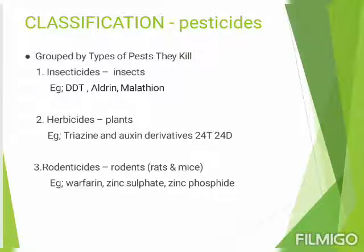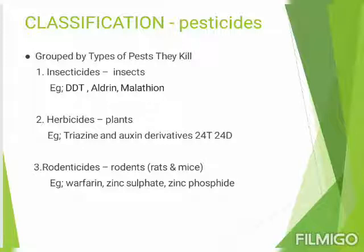DDT is banned in the US but is still used in India in many areas. The second type is herbicides, used to kill unwanted herbs and weeds — like triazines and oxygen derivatives such as 2,4-T and 2,4-D. Thirdly, we have rodenticides, which kill organisms like rats and mice. Examples include warfarin, zinc sulfate, and zinc phosphide.